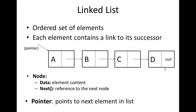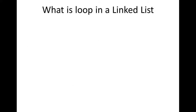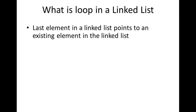The last node in a list is not going to point to another element, so null is placed there because it is the last element. A loop in a linked list is when the last element points to an existing element within the linked list.